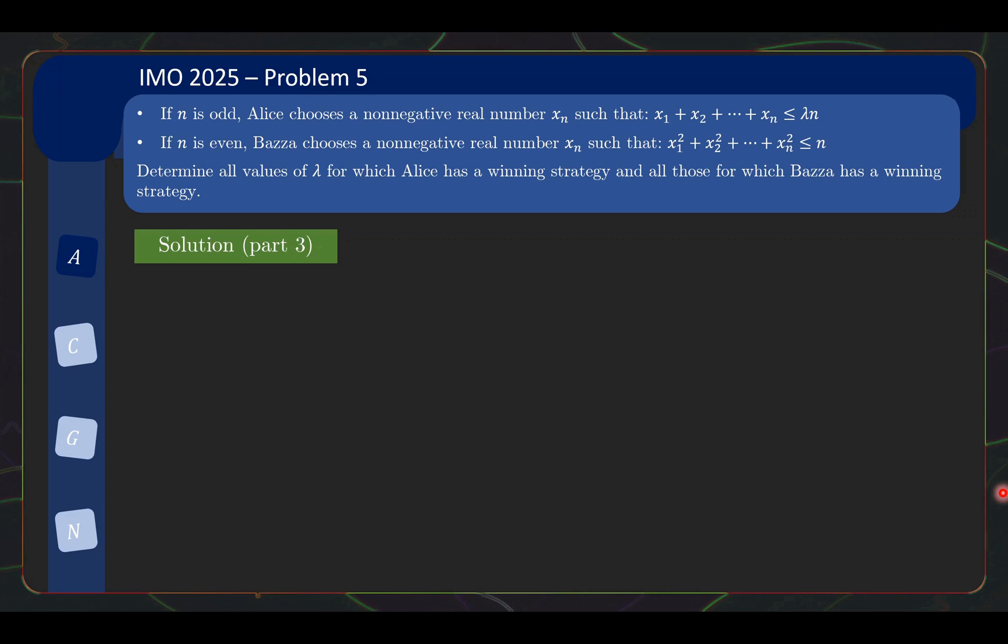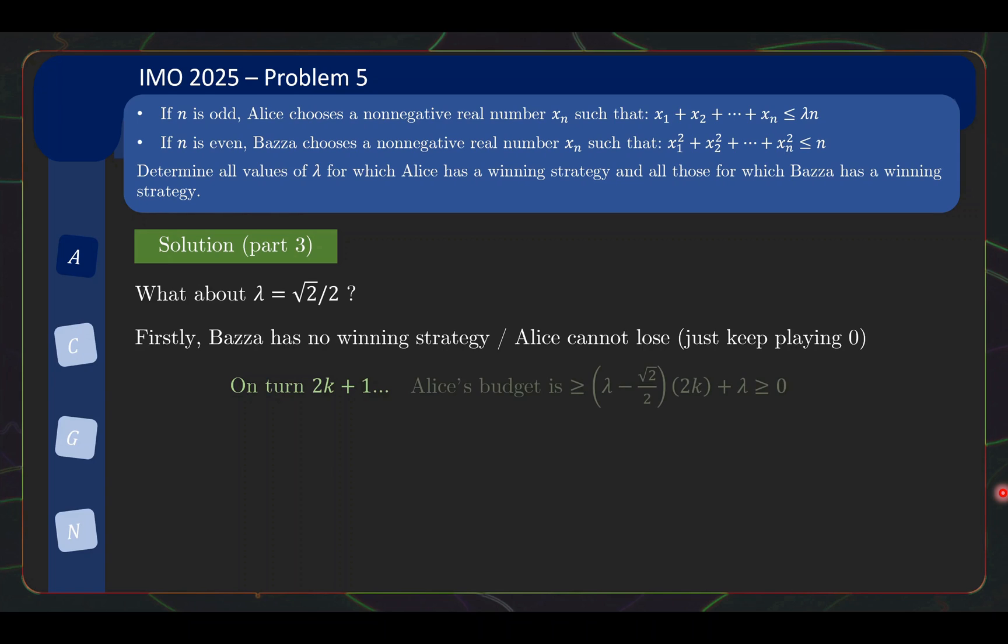There's one more thing that you need to check which is lambda equals to square root 2 over 2. Now in this case, neither of them will have a winning strategy. So firstly, Bazaar has no winning strategy or in other words, Alice cannot lose because Alice can just keep playing 0. And as you just saw on turn 2k plus 1, basically Alice's budget is going to be at least this, which is greater than 0, so Alice can keep on playing 0. So there cannot be a strategy that wins for Bazaar.